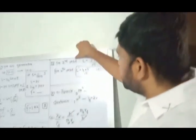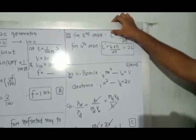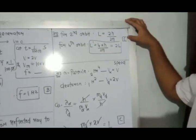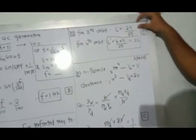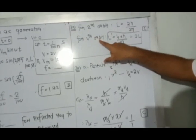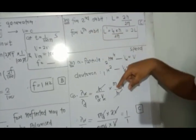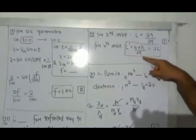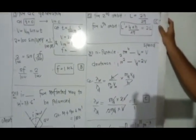Question number 30. L is the angular momentum of an electron in the second orbit. Find the angular momentum in the fourth orbit. From Bohr's quantum condition, L = nh/(2π). For n = 2: L = 2h/(2π). For n = 4: L' = 4h/(2π) = 2 × (2h/2π) = 2L. The angular momentum of the fourth orbit is 2L. Option C.